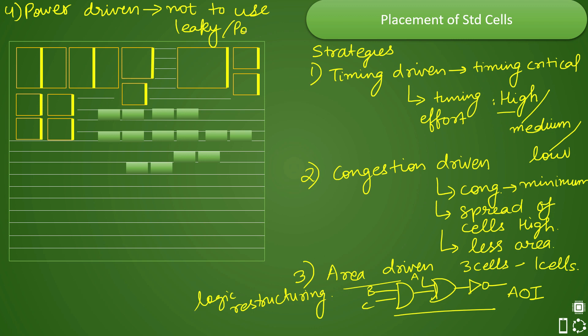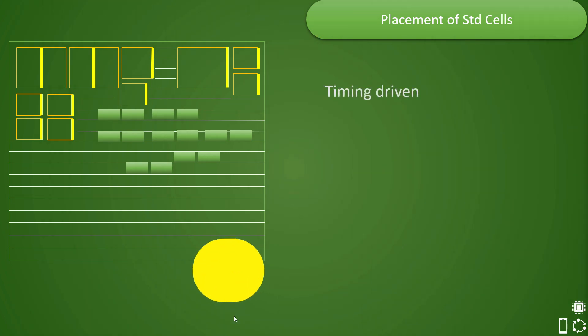So this is power driven means power optimization when your design is power critical. The typical use case of this is when you have mobile related chips or automobile related chips which have power criticality more compared to the performance of the device. That time you use power driven strategy more.